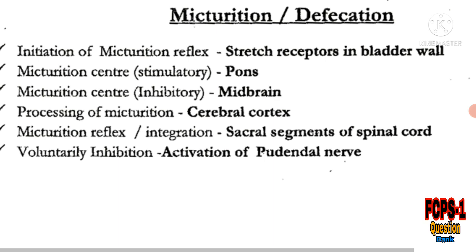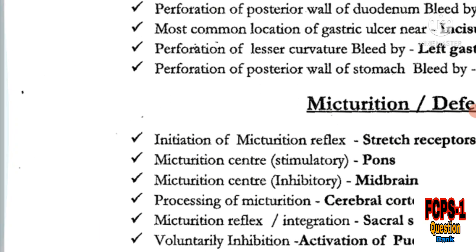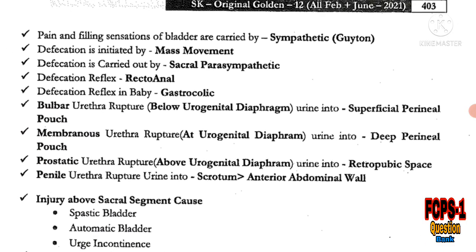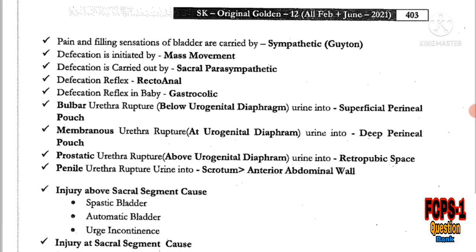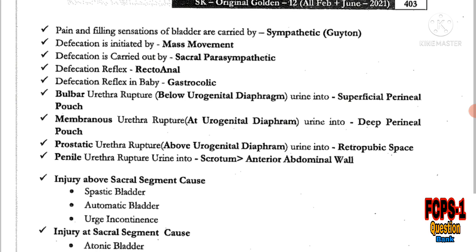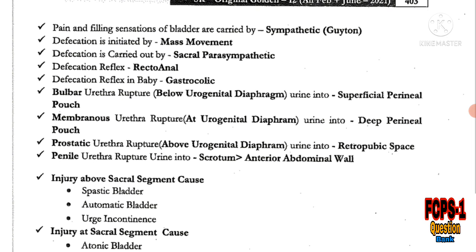Voluntary inhibition of micturition is by activation of the pudendal nerve. Pain and feeling sensation of the bladder are carried by sympathetic nerves. Defecation is initiated by mass movement, carried by the sacral parasympathetic system. Defecation reflex in adults is the recto-anal reflex, and in babies it is the gastrocolic reflex.